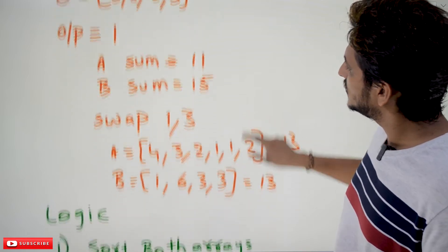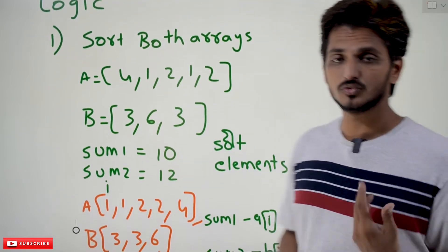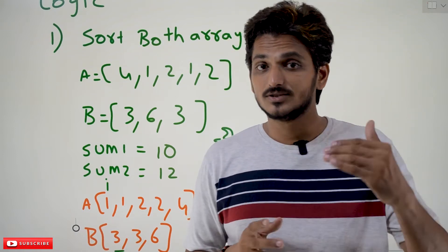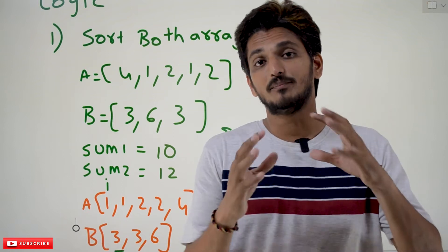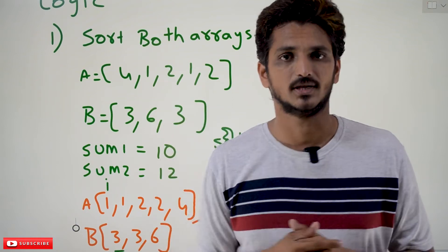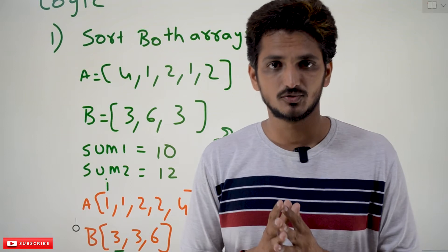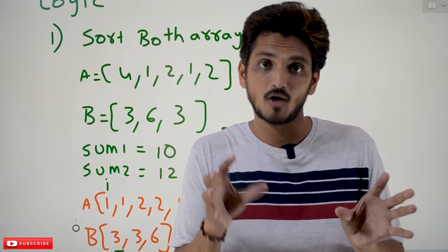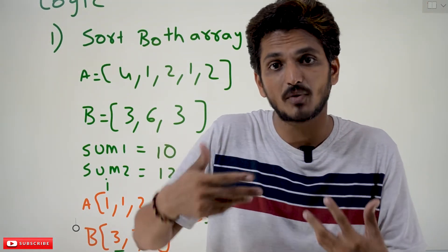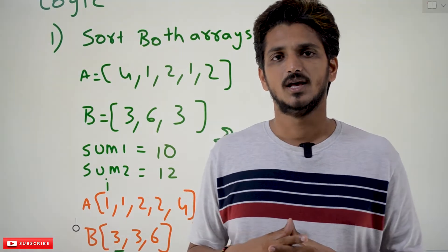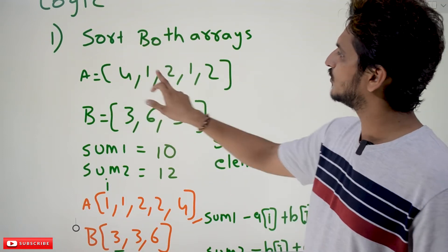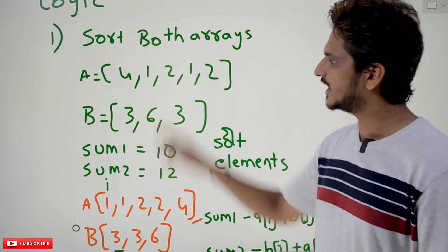In order to solve this example, we have two different ways. We are going to explain both the ways. One is using hashing and one is using the logic of merge sort — by sorting the elements we are going to do the first logic. Both are useful because understanding the way we solve these examples may help you in applying this type of logic in similar examples. Coming to the first way: take the example A = {4, 1, 2, 1, 2} and B = {3, 6, 3} — these are the A and B elements.